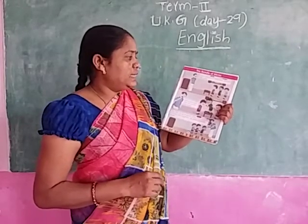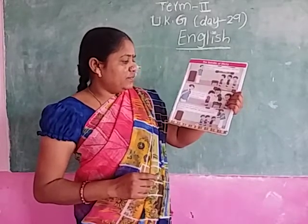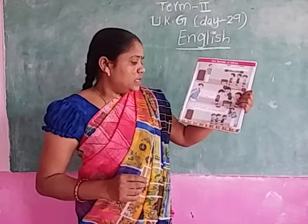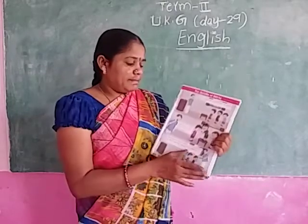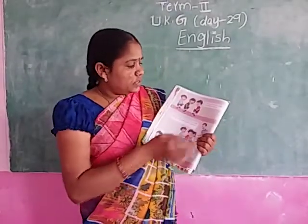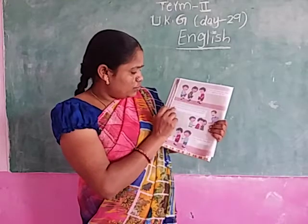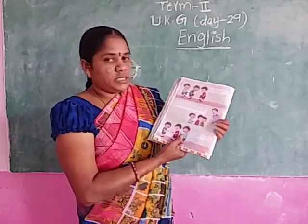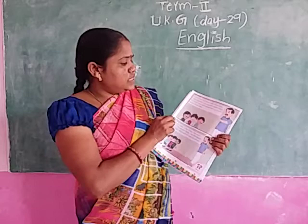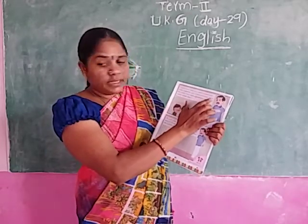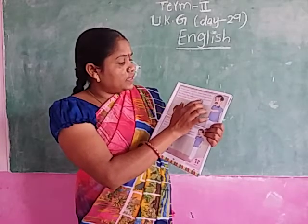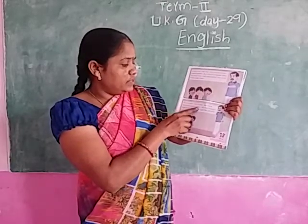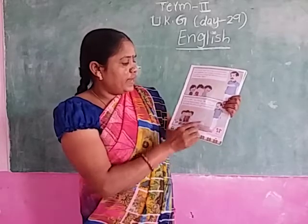Story: The Bundle of Sticks. Sham was a rich merchant. He had three sons. His sons often kept fighting with each other, which made Sham sad. One day he gave each of his sons a bundle of sticks tied together and asked them to break it. They all tried but were not able to do so.